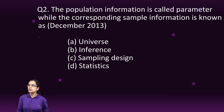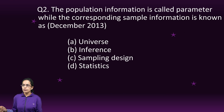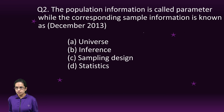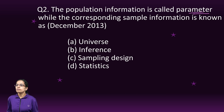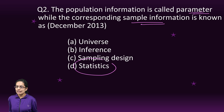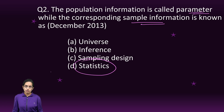The next question is about population information. The population information is known as parameter and the sample information is known as statistics. That is the right option — a very direct question.